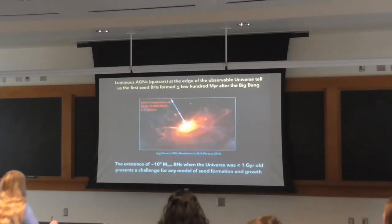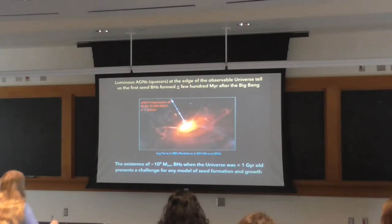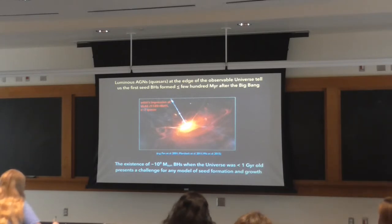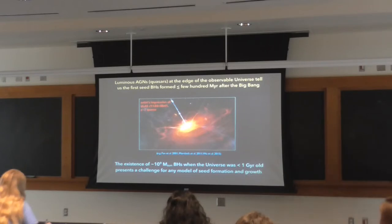One thing we know is that the first black hole seeds likely formed within just a few hundred million years after the Big Bang, because we can observe billion-solar-mass black holes lit up as luminous quasars when the universe was less than a billion years old. This constrains any model of seed formation and subsequent growth — whatever you start with, you have to be able to reproduce these massive black holes at early times.